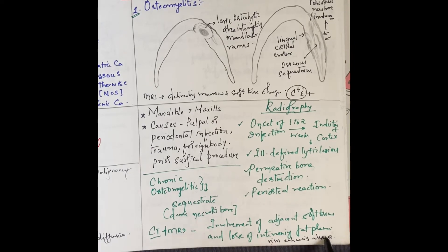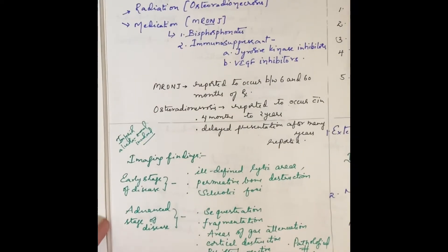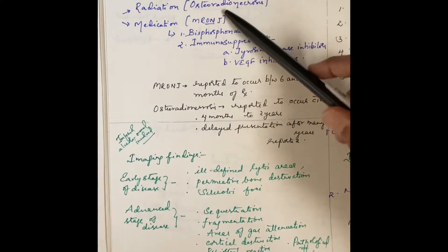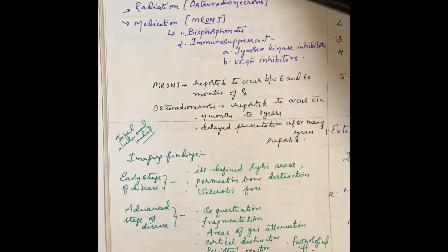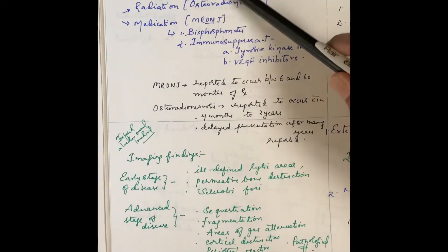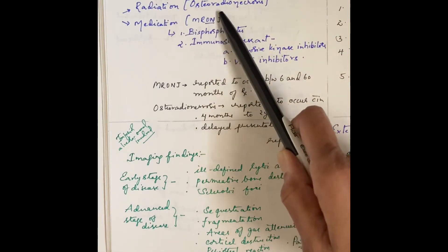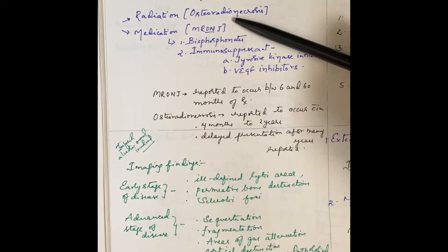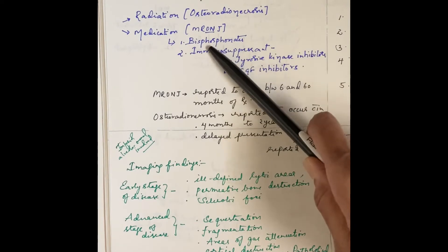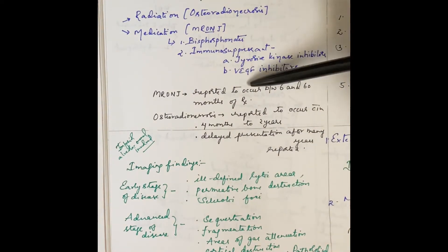Osteonecrosis also presents as radiolucent lesions with ill-defined borders in non-odontogenic areas. Osteonecrosis can be secondary to radiation — that is called osteoradionecrosis — or it can be medication-related osteonecrosis of the jaw (MRONJ), secondary to bisphosphonates, immunosuppressants such as tyrosine kinase inhibitors.